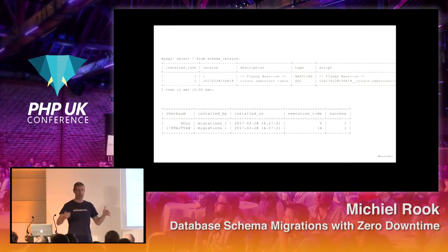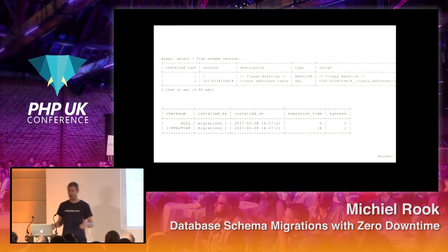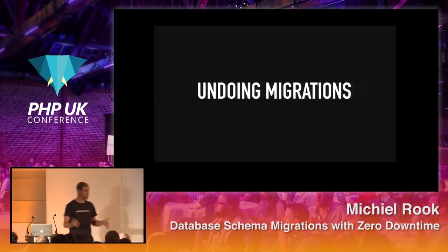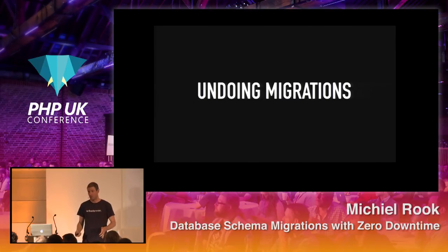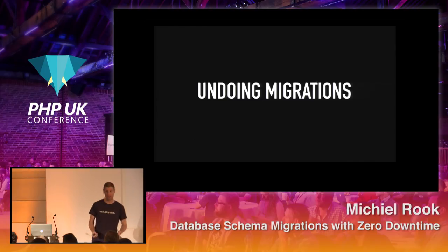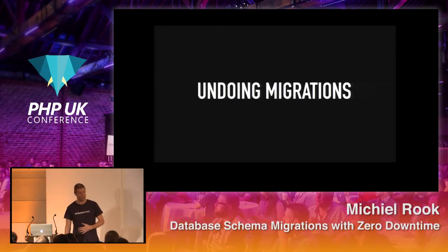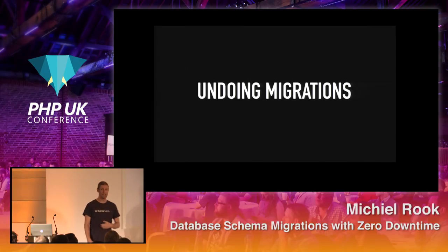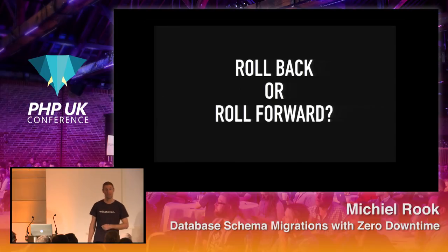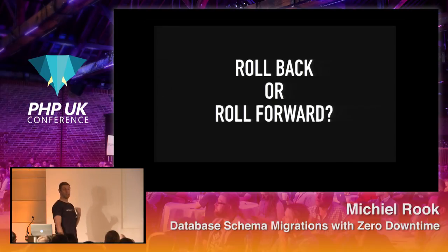The down direction in a migration means undoing a migration — another word for that is rollback, rolling back your database. I want to get into whether rolling back or actually rolling forward is the way to go. Let's look at why a rollback could be a problem.